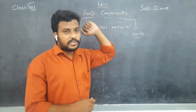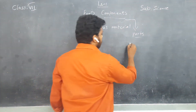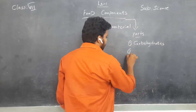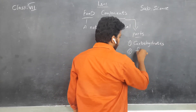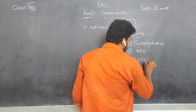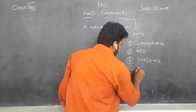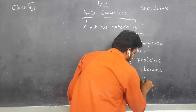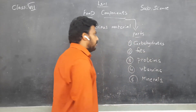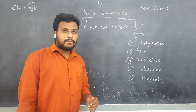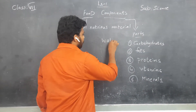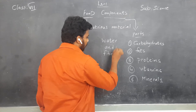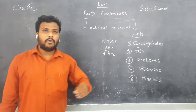Like that, in food also there are components. What are the components? They are carbohydrates, fats, proteins, vitamins, and minerals. Along with these, we also get some components like water and fiber. We get water and fiber mainly from vegetables.